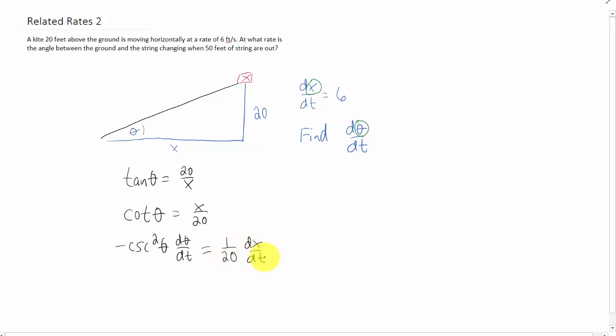Okay, now we have our equation that relates all of the variables that we need. We're given dx/dt, so we know that one. We're trying to find this one. What we don't know is cosecant squared theta.